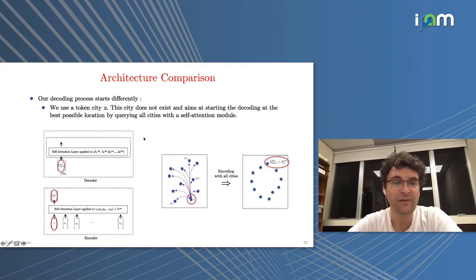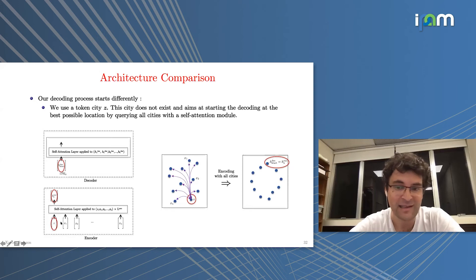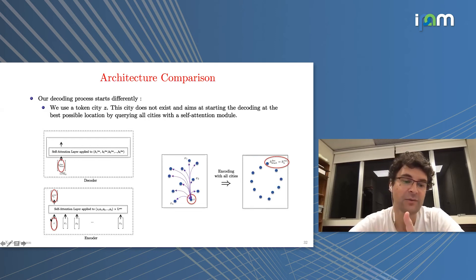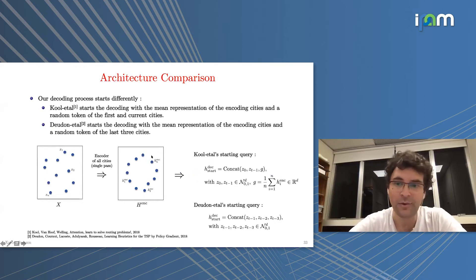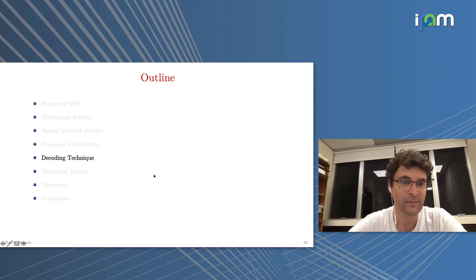Comparing with the closest models from Kool and Deudon: we all use the same Transformer encoder, but the decoding architecture differs. Our query uses all cities in the partial tour via self-attention. Kool's query uses the first city, last city in the partial tour, and a global representation of all cities. Deudon's query uses the last three cities. For the starting token, we use a random vector — a 'ghost city' — that queries all other cities via the encoder self-attention to find the best starting point for decoding, similar to a classification token in NLP.